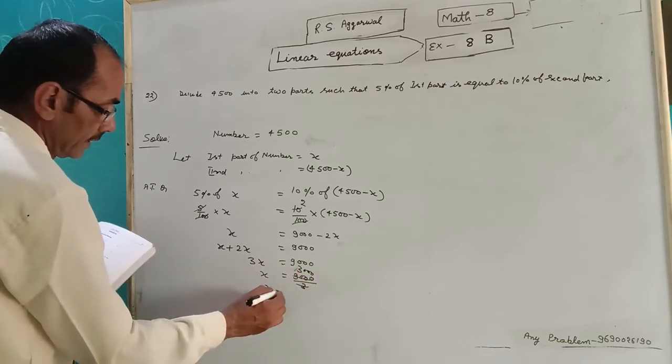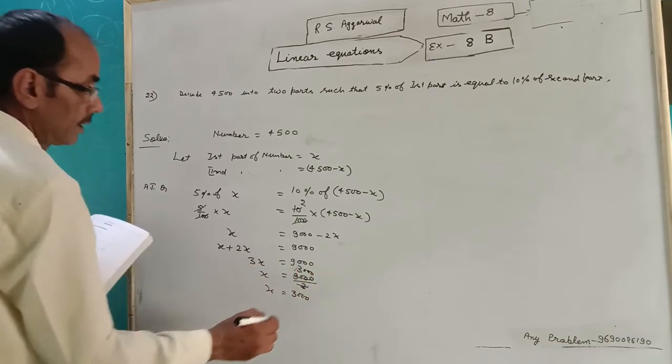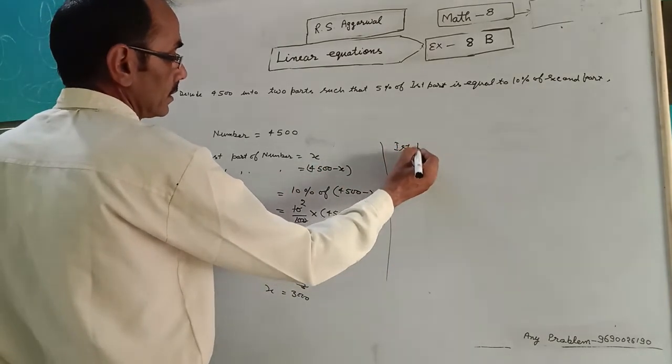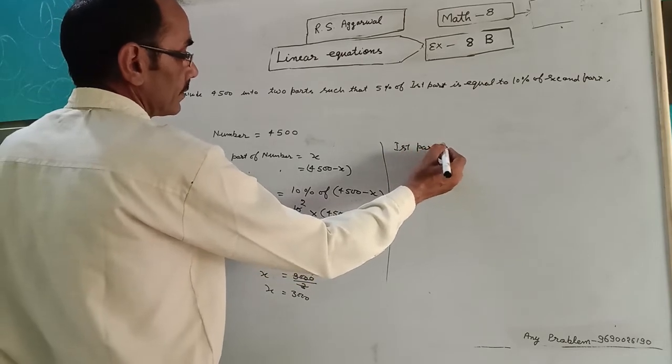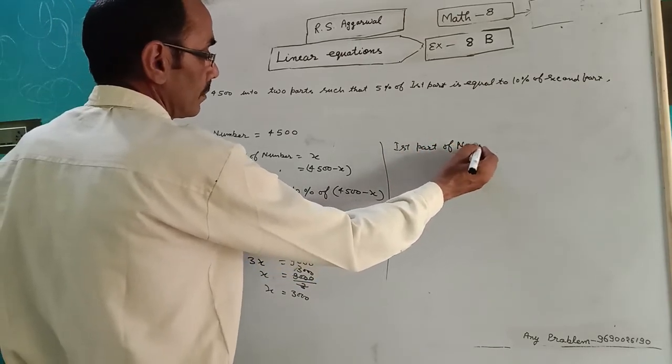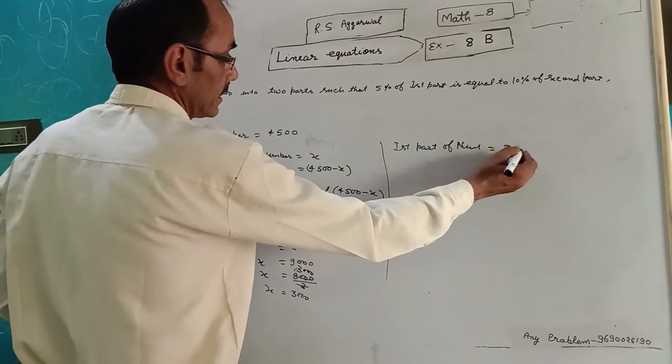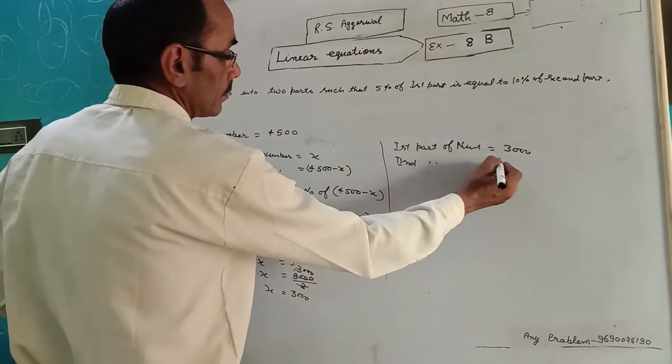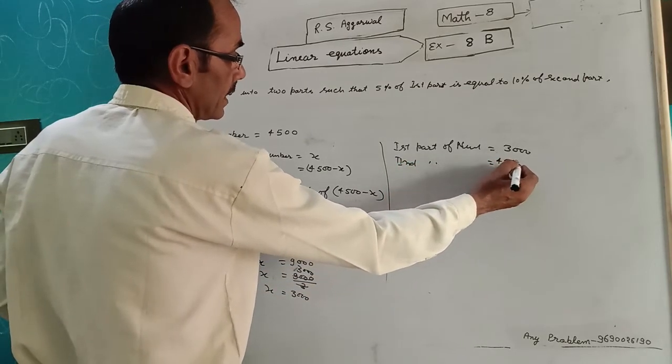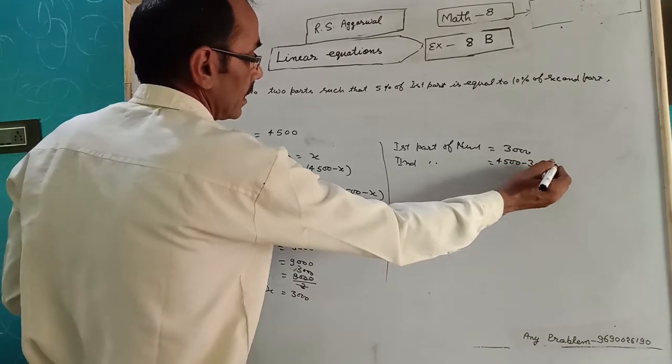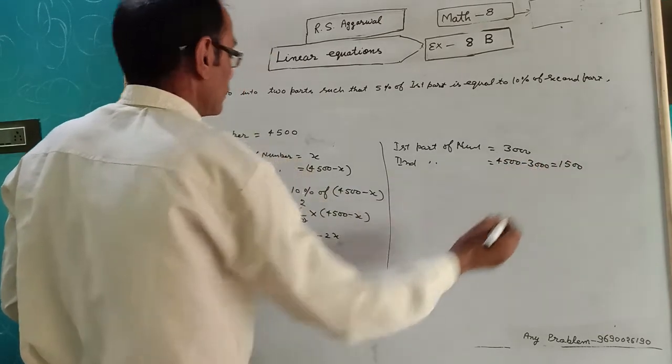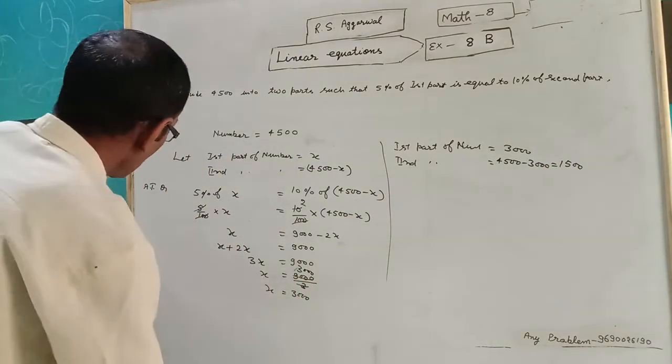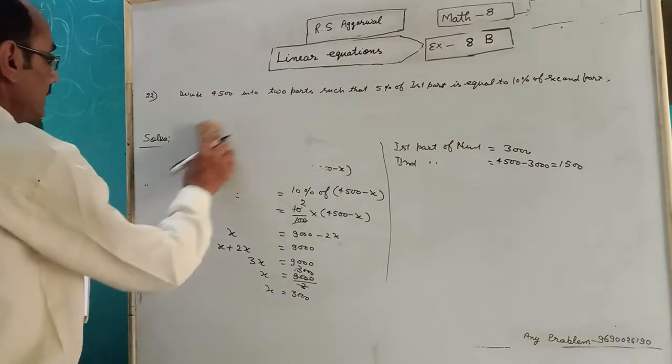After sum is 3x is equal to 9000. x is equal to 9000 upon 3. x value is 3000. First part is 3000. Second part is 4500 minus 3000. After minus, 1500.